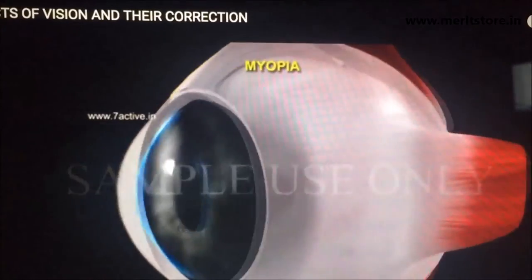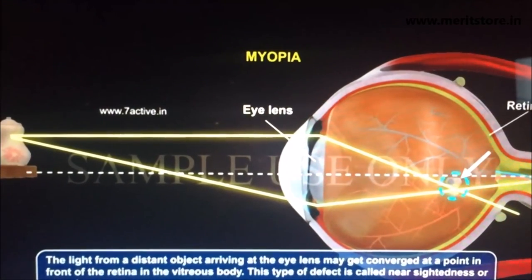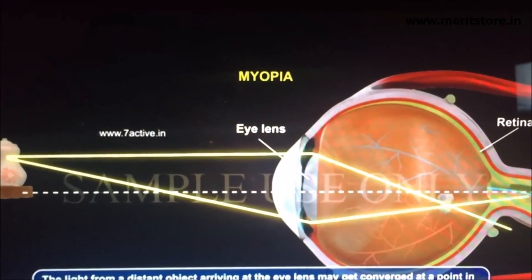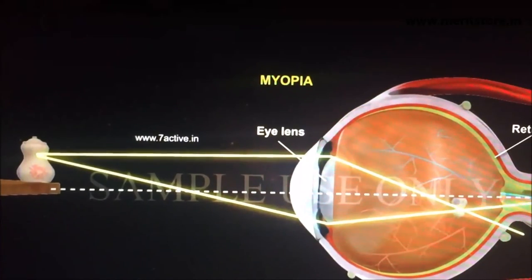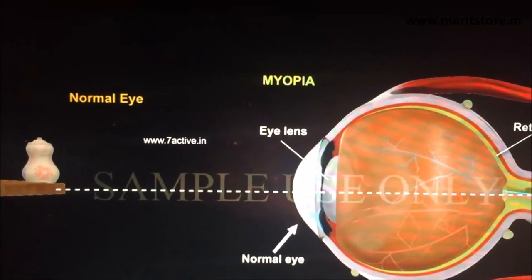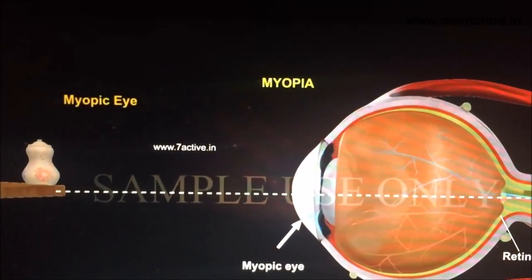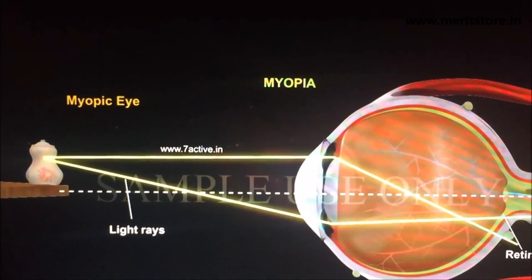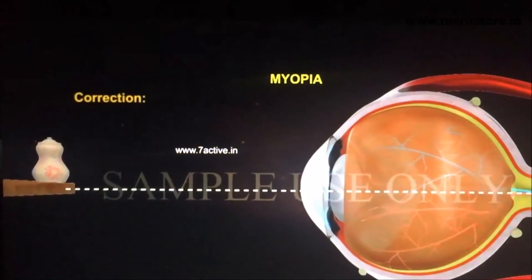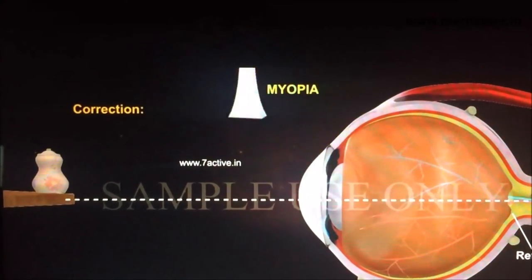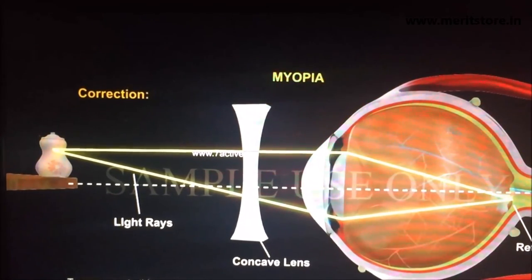This is a very important topic. In myopia, the light from a distant object gets converged at a point in front of the retina — this defect is called nearsightedness or myopia. In a normal eye, light rays fall exactly on the retina. In a myopic eye, the light falls ahead of the retina, so the image is very blurred. To correct this, a concave lens is placed between the eye and the object; it diverges the light first, and then the net focus falls on the retina.